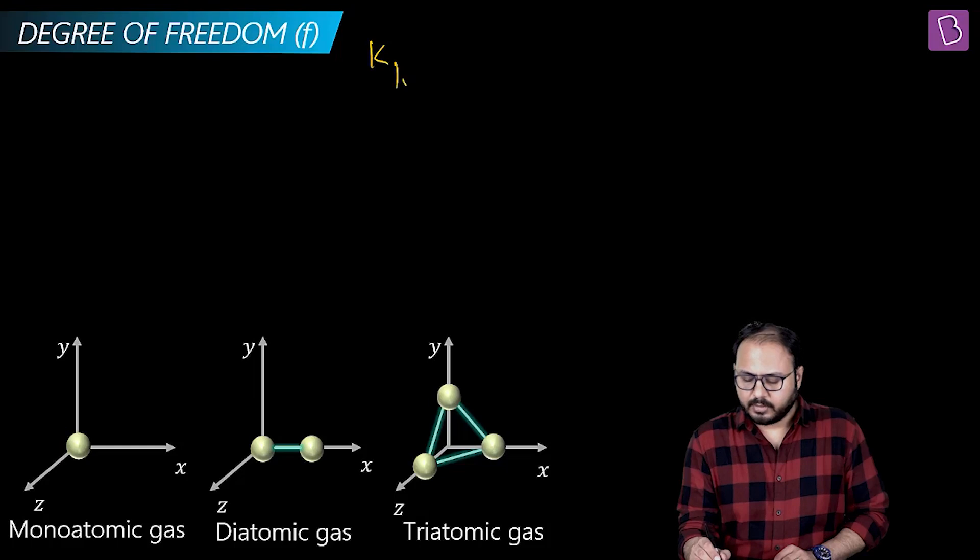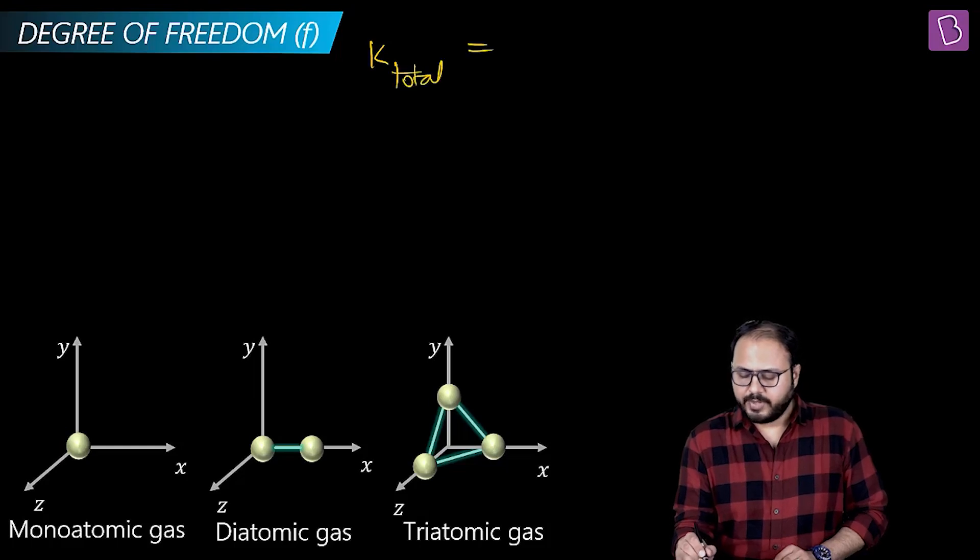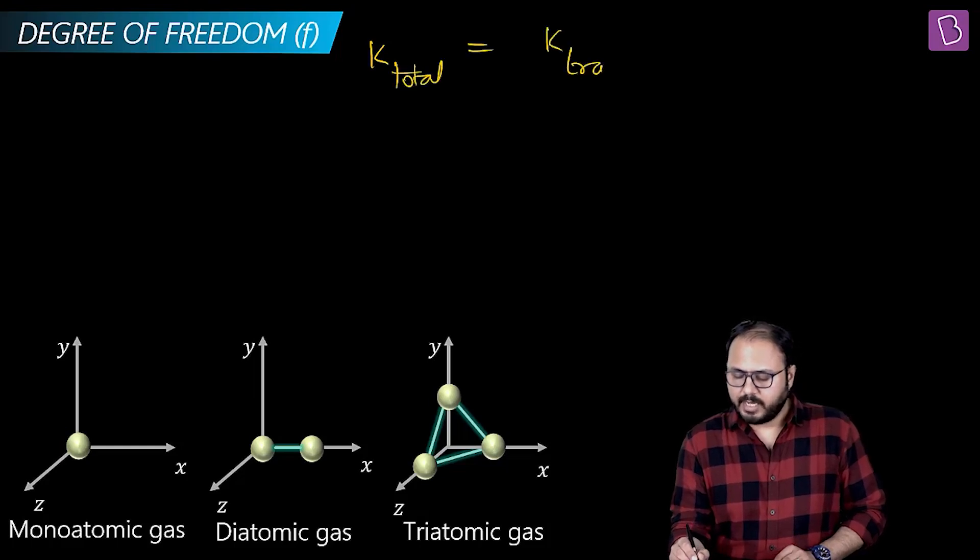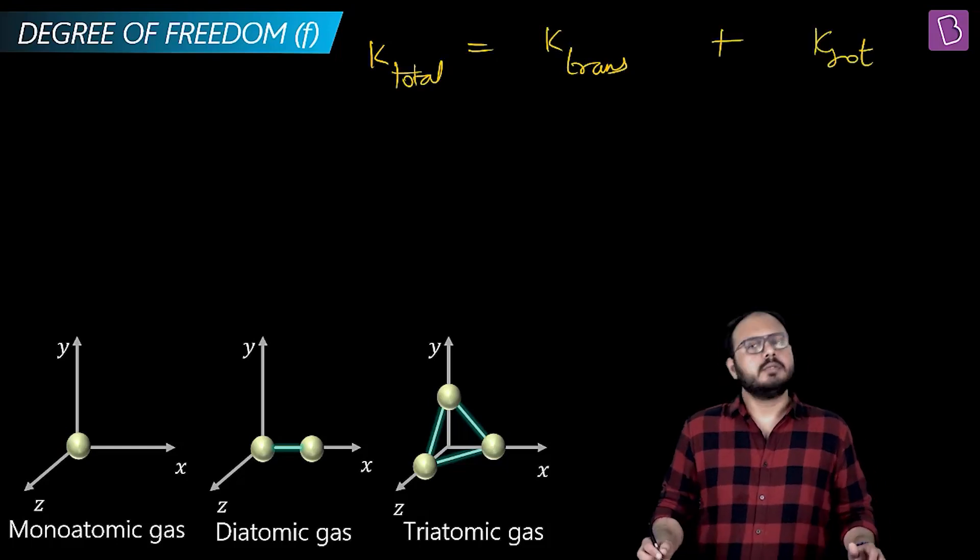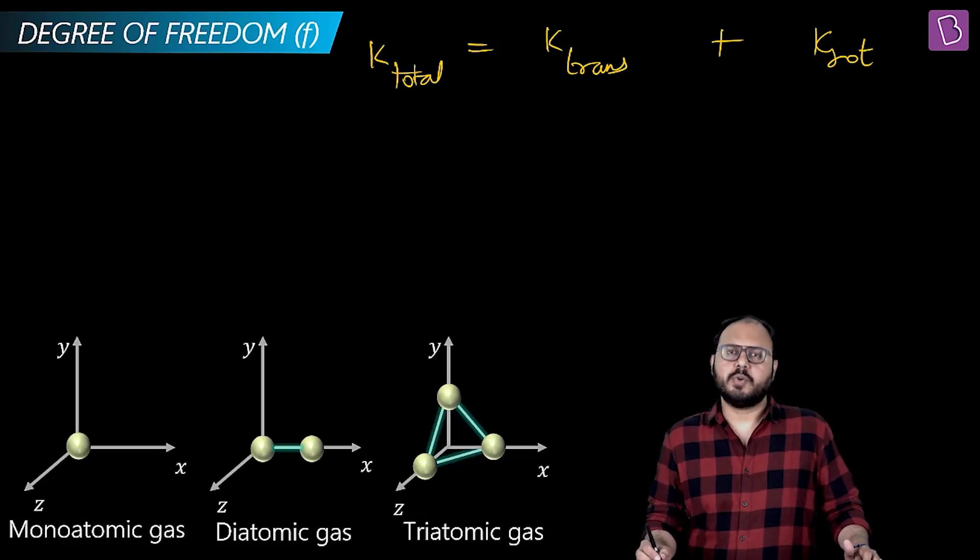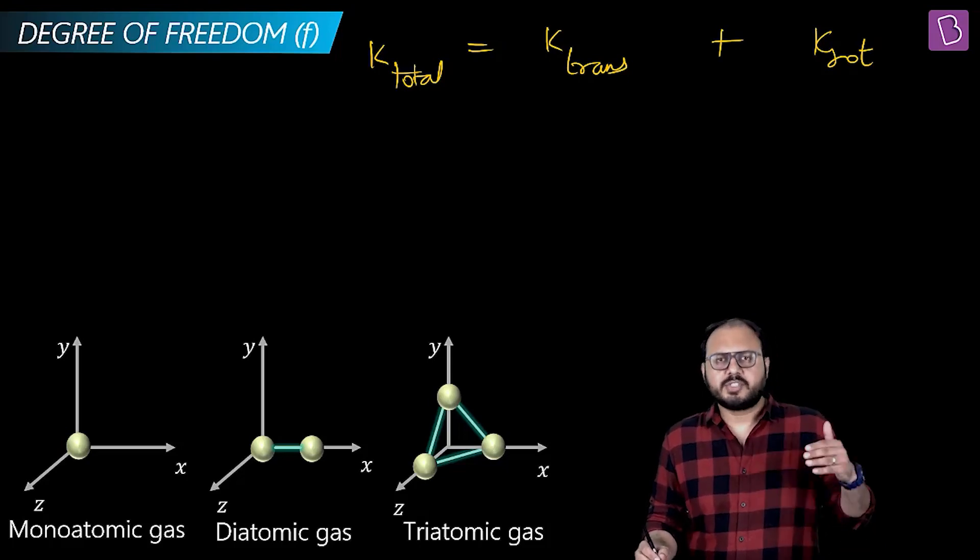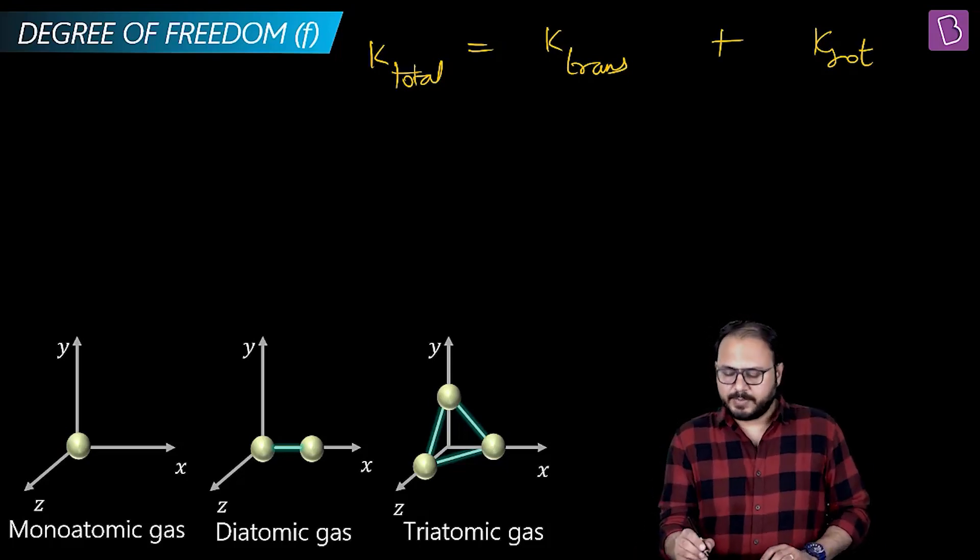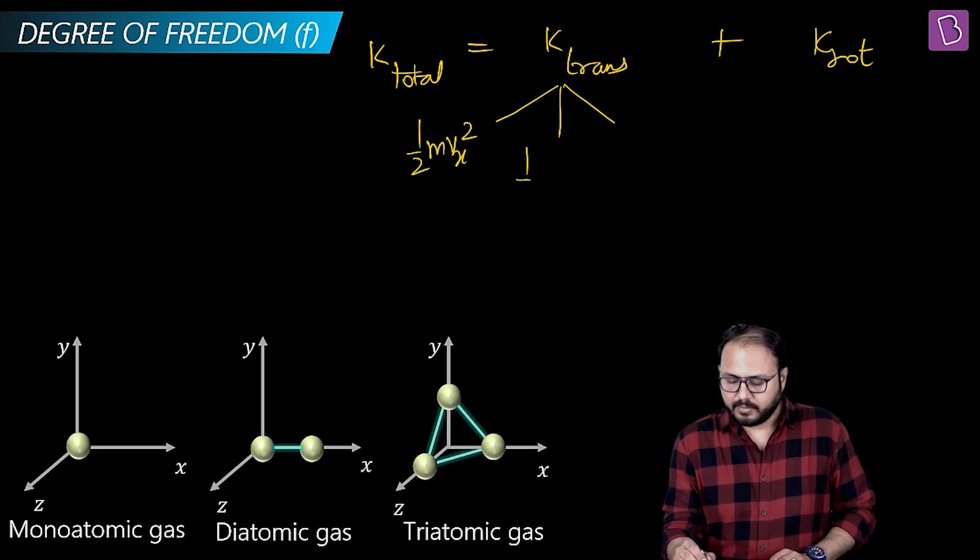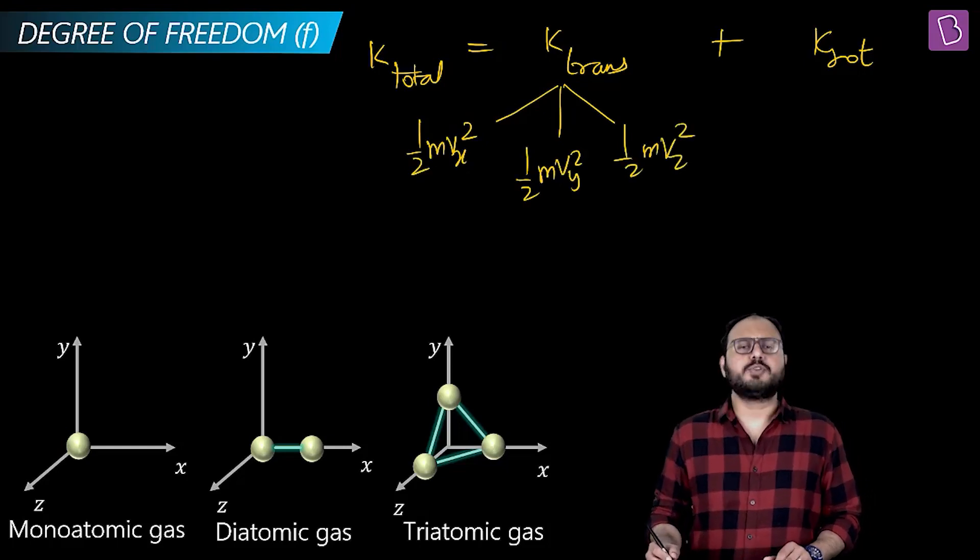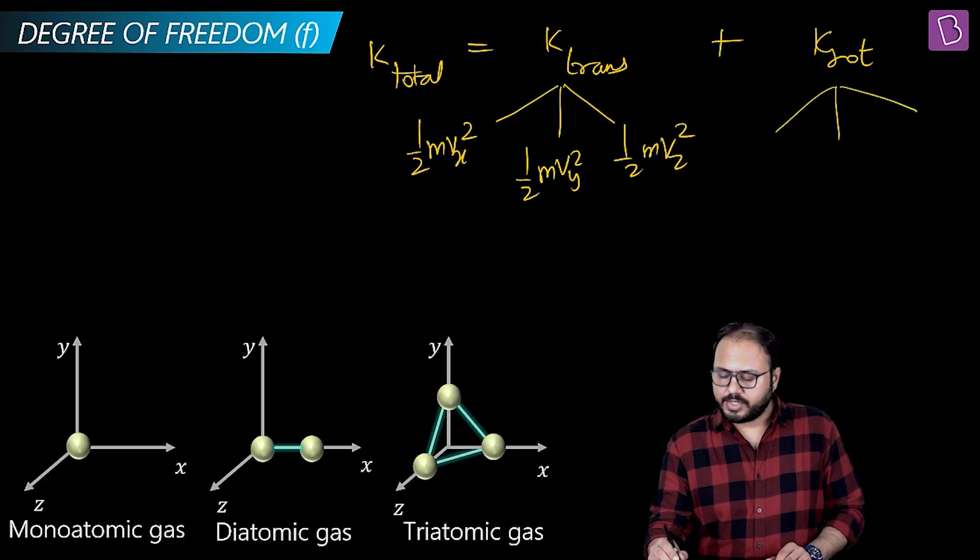K total will be K translational plus K rotational. What is K translation? Half mv squared. Is the velocity constrained to be along one axis? No. That means K translation will contain three terms: half mvₓ², half mvᵧ², half mvᵤ². Is it correct or not? Absolutely correct.